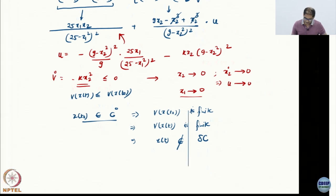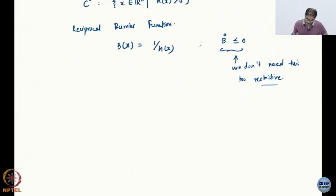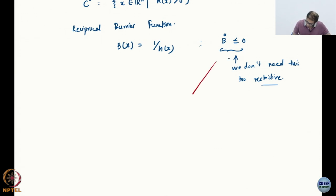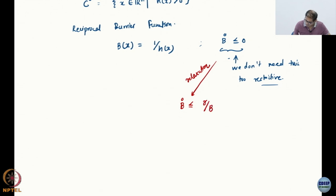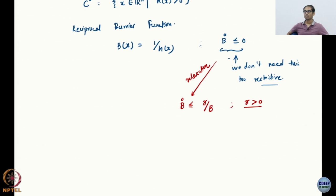It is not very obvious to me what the shape will be. I can write this as 25 over 25 minus x1 squared minus 1, and similarly 9 over 9 minus x2 squared minus 1. So it is actually some kind of a funny shape — it is not clearly an ellipse. The sort of point I am trying to make is that as you keep reducing your initial conditions, you will get smaller and smaller sets.